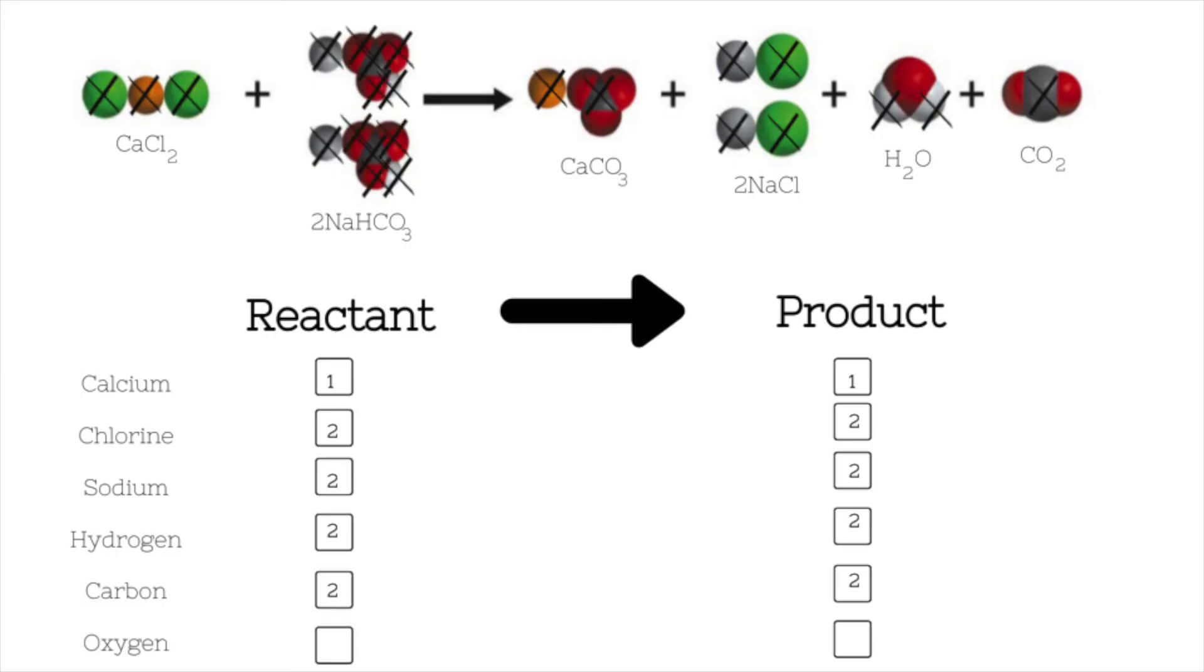The last atoms that we're going to mark in our reactant are the oxygen atoms, and there are six of them, each of these red circles. Here on the product side, we still have six oxygen atoms, although they're very split apart. Three are here, one is here, and two are over here. So I'll mark six in the product side of my chart.